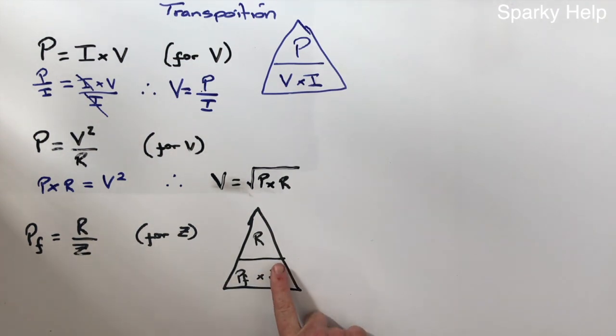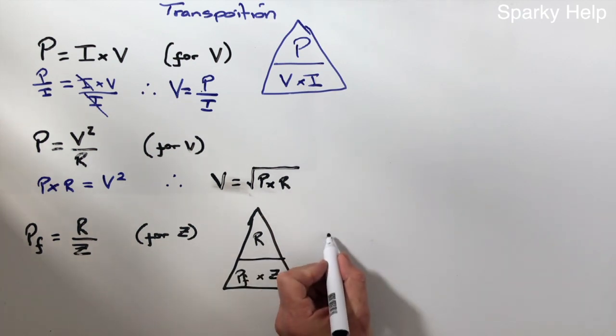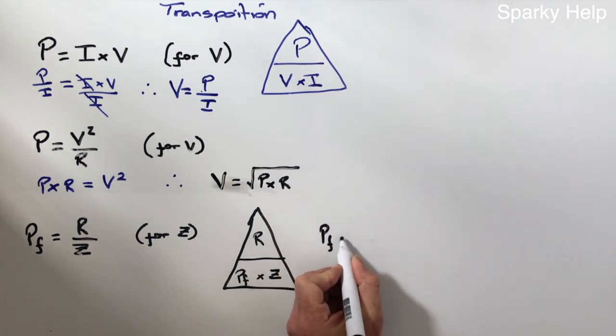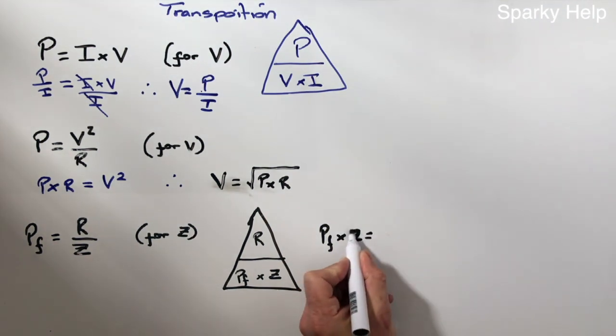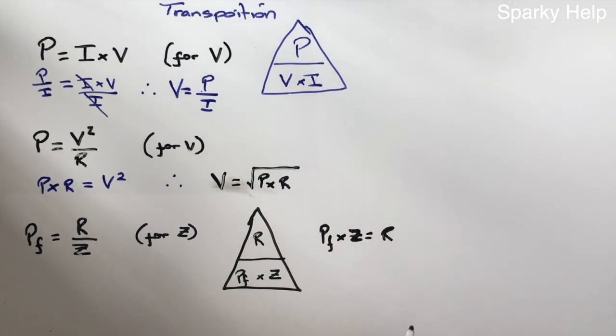If you want to find Z, it becomes R divided by power factor. How does that work? Well, this is divide, so that goes over there and becomes a multiply. Your stages become power factor times Z is equal to R. We want it for Z, so power factor comes and drops underneath and becomes a divide.